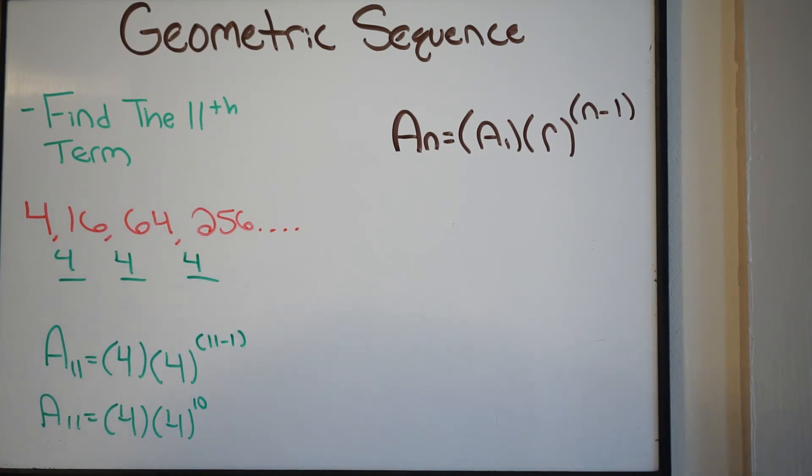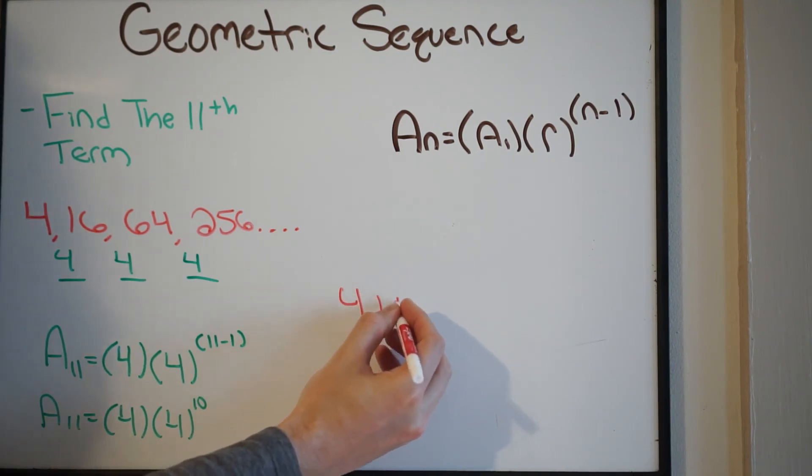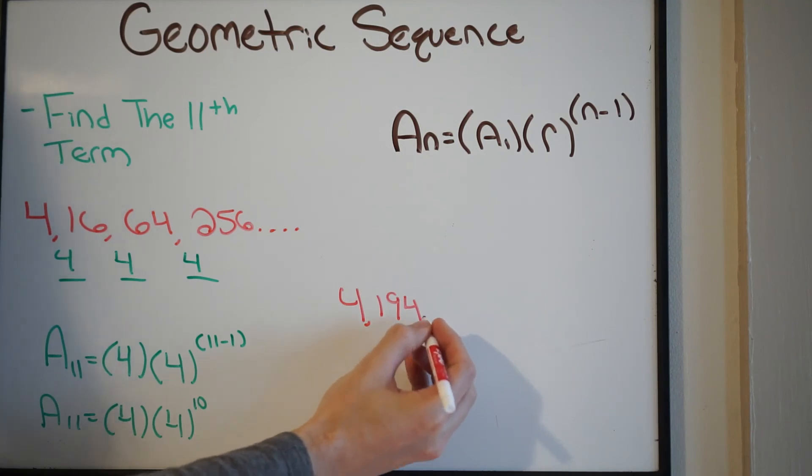So let's go ahead and use our calculator and do the rest. Plugging this in, we get 4 times 4 to the 10th power, and we get 4,000,000, and then 304,000, and then 304.